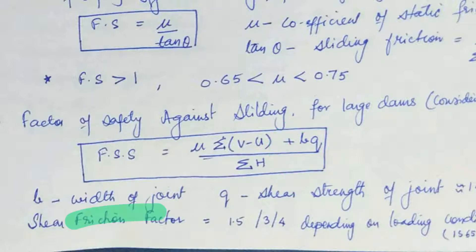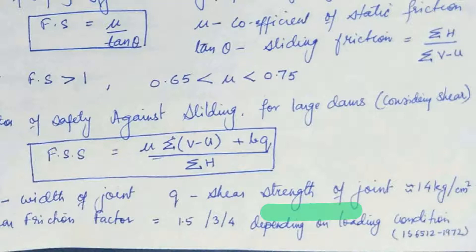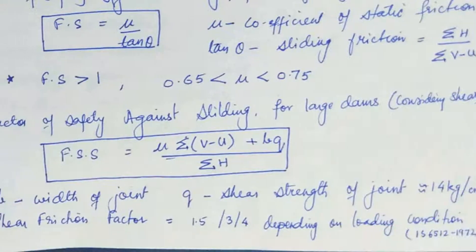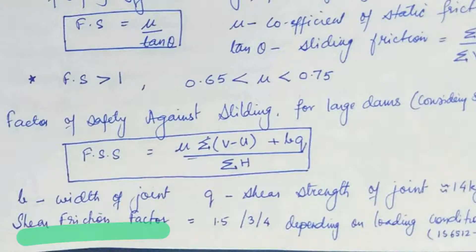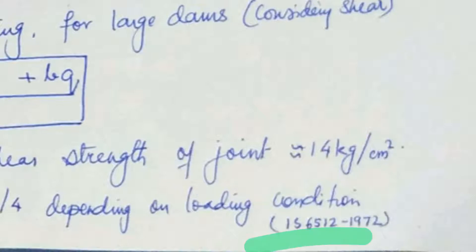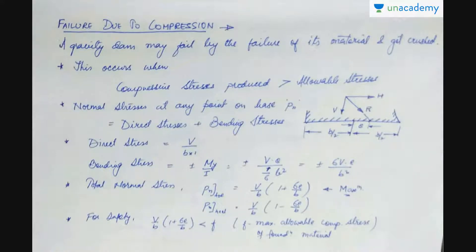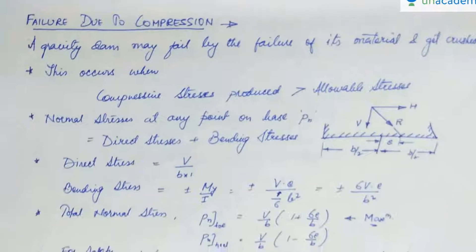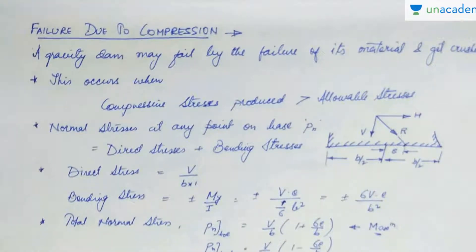Here, figure BQ actually also appears. What is B? B is the width of the joint and Q is the shear strength of joint, which can be taken as 14 kg per centimeter square. The shear friction factor is actually taken as sometimes 1.5 or maybe 3 or maybe 4 depending upon the loading conditions as mentioned in the IS codebook IS 6512 1972.